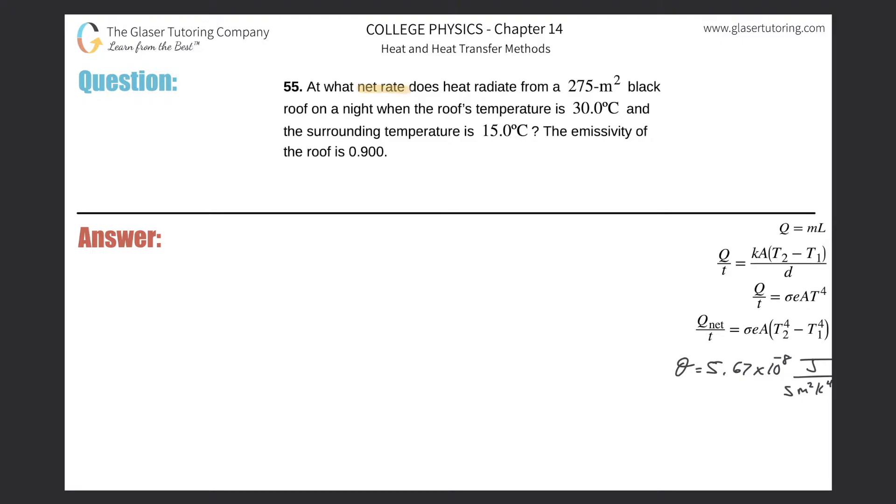Number 55. At what net rate does heat radiate from a 275 meter square black roof on a night when the roof's temperature is 30 degrees Celsius and the surrounding temperature is 15 degrees Celsius? The emissivity of the roof is 0.9. Keyword here is radiate. Anytime you're dealing with radiation, you're dealing with these two formulas right here.